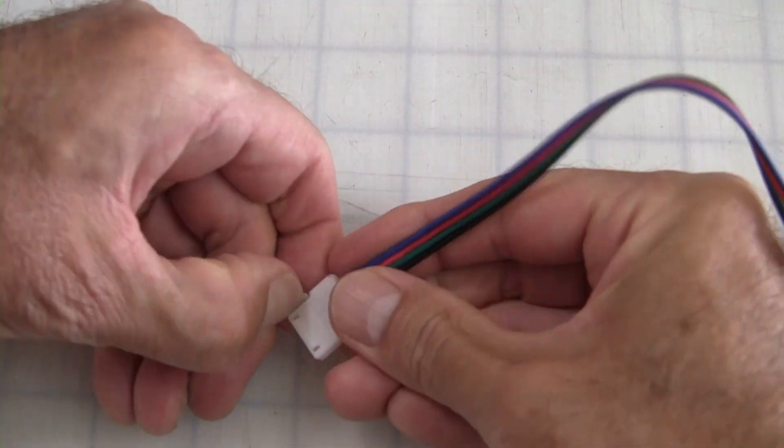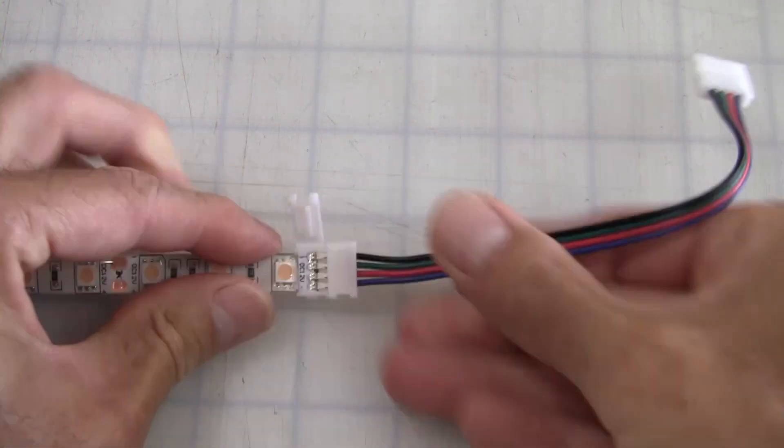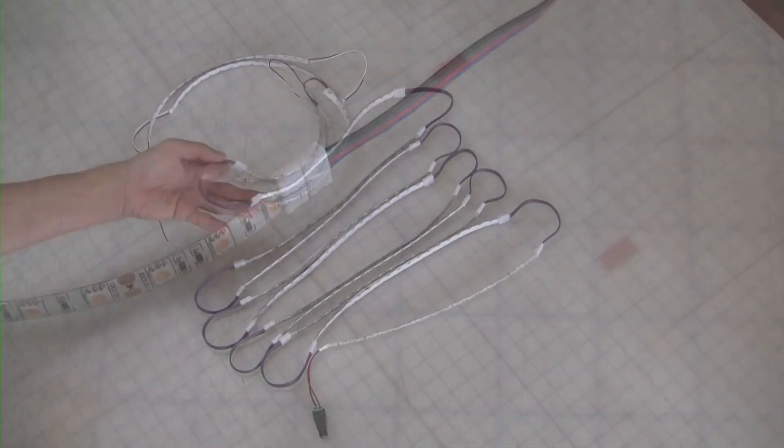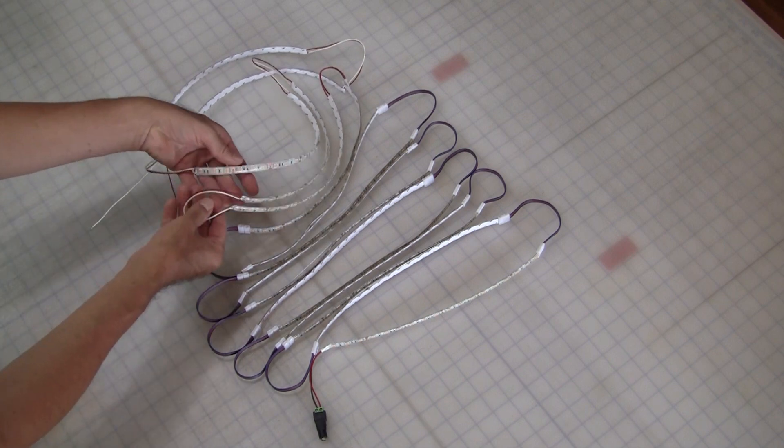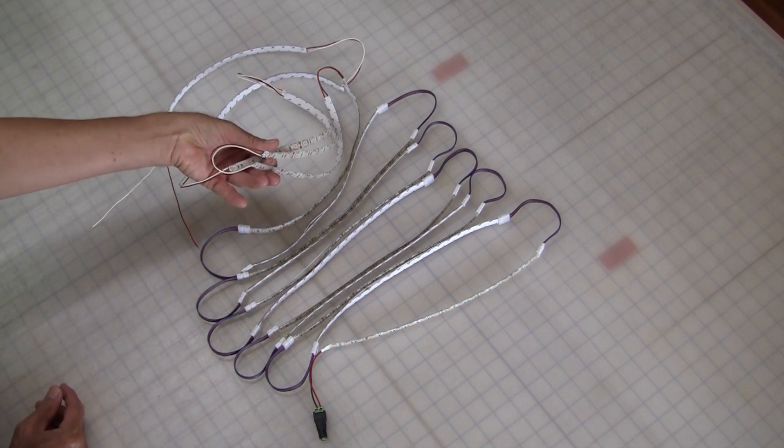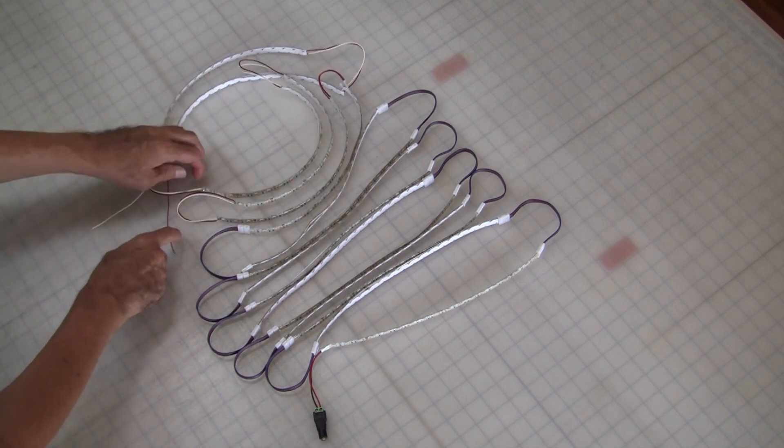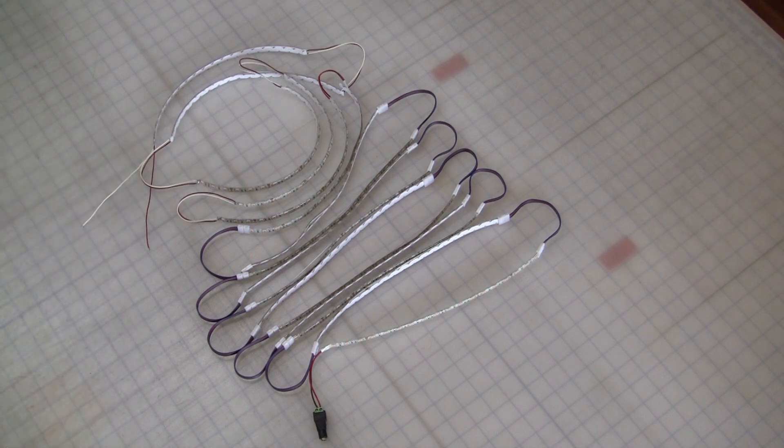I used LED strip light connectors to daisy chain each individual section. Unfortunately, I didn't have enough, so I soldered the last few strips using 22 gauge stranded wire.